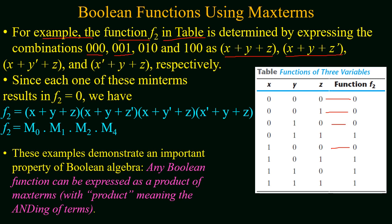For 0,0,1 the max term will be x+y+z'. For 0,1,0 the max term will be x+y'+z. For 1,0,0 the max term will be x'+y+z. We combine all these max terms by AND-ing or multiplication. So f2 will be the product of max terms, or using their designations, F2 will be the product of M0, M1, M2, and M4. This demonstrates the important property that any boolean function can be expressed as a product of max terms, where product means AND-ing or multiplication of terms.